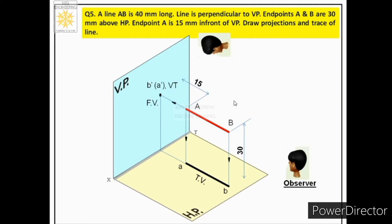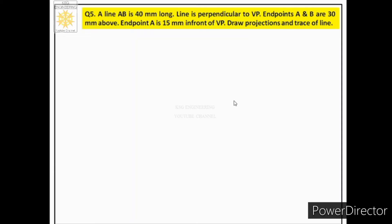Now let us represent this case on paper. The first step is to identify the quadrant. It is mentioned 'in front of VP' and 'above HP', so the quadrant is first. The second step is to represent that quadrant — we draw a reference line XY, consider the space above as VP and below as HP, and label VP and HP in gothic style.